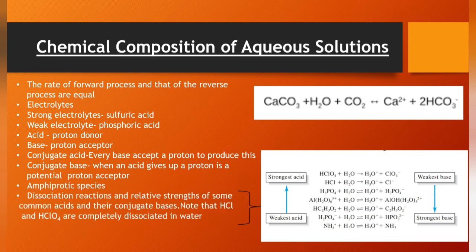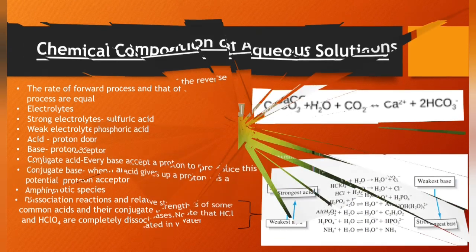Species that have both acidic and basic properties are amphoteric. Here shows the dissociation reactions and relative strengths of some common acids and their conjugate bases. Note that HCl and HClO4 are completely dissociated in water.